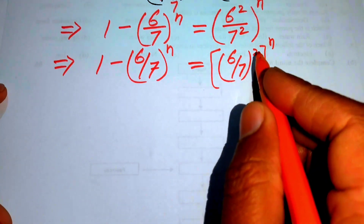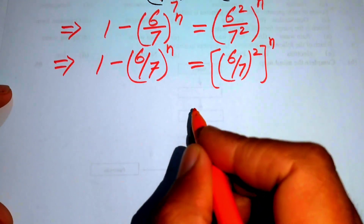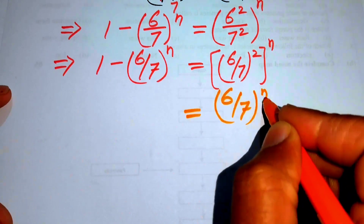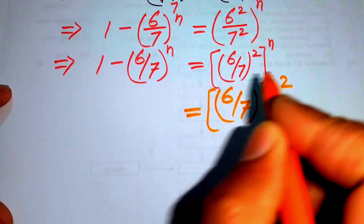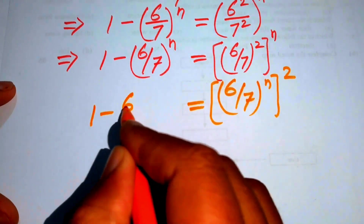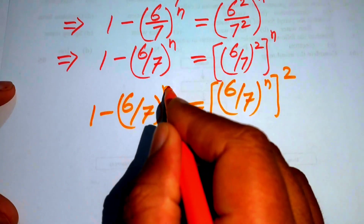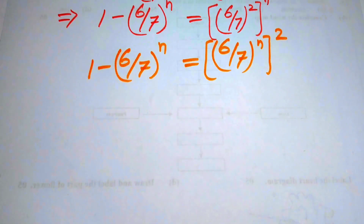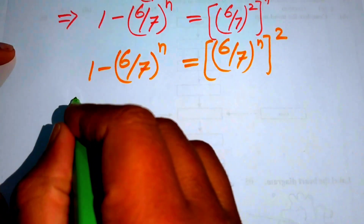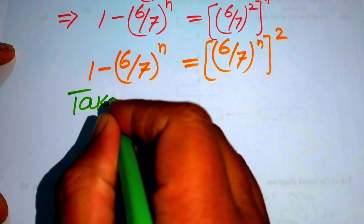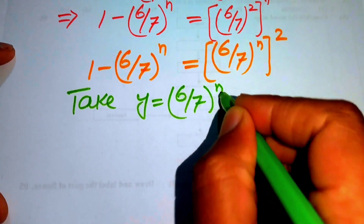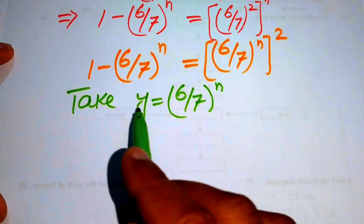We interchange the exponents and rewrite the right side as [(6/7)^n]². So we have 1 minus (6/7)^n equals [(6/7)^n]². We now convert this exponential equation into quadratic form by letting y = (6/7)^n.